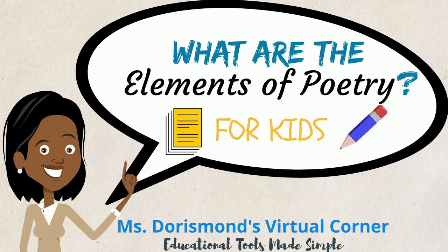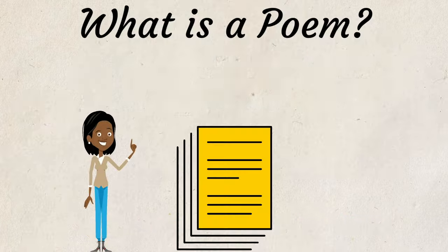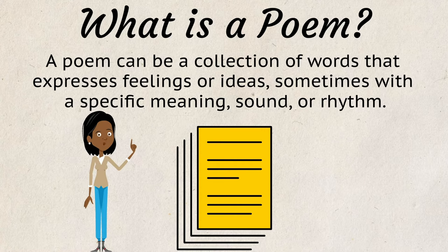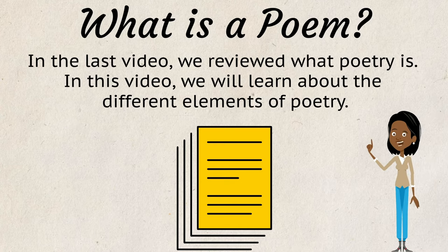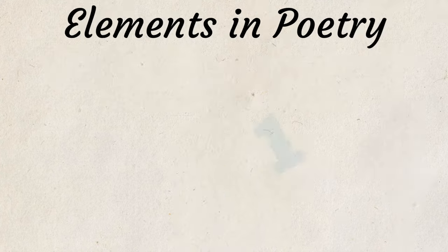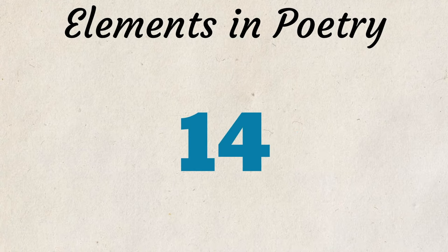What are the elements of poetry? A poem can be a collection of words that expresses feelings or ideas, sometimes with a specific meaning, sound, or rhythm. In the last video, we reviewed what poetry is. In this video, we will learn about the different elements of poetry. There are 14 elements in poetry.